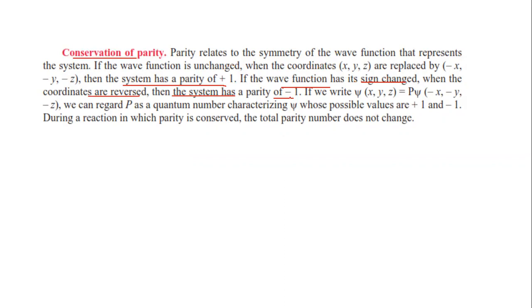If we write psi of x, y, z equals P times psi of minus x, minus y, minus z, then we can regard P as a quantum number characterizing psi, whose possible values are plus 1 and minus 1. During a reaction where parity is conserved, the total parity does not change. Therefore, before and after the reaction, parity should be the same.